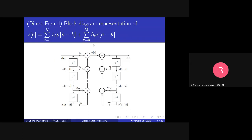Looking at v(n): input x(n) delayed by 0 samples gives b0*x(n), plus b1*x(n-1) delayed by 1 sample, plus b2*x(n-2), and so on up to bM*x(n-M). In total we require M delays, which we implement by cascading single-sample delay blocks. So x(n) → x(n-1) → x(n-2) → x(n-3) → ... → x(n-M), giving M delay elements.